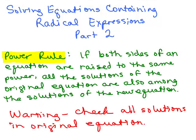This is part 2 of solving equations containing radical expressions using the power rule. That's where you can square both sides, cube both sides, or raise both sides to any power. The solutions of the original equation will be amongst the solutions of the new equation, but it does not go the other way around — you might get some solutions that do not check in the original. So the warning is: make sure you check all your solutions in the original equation.